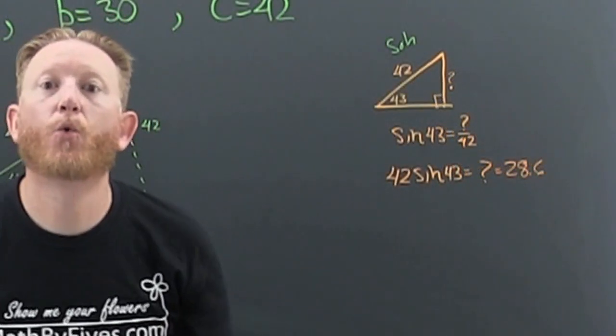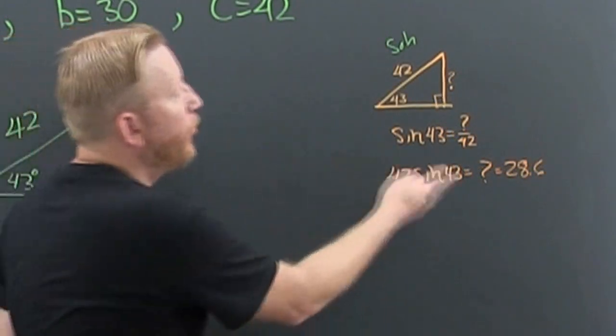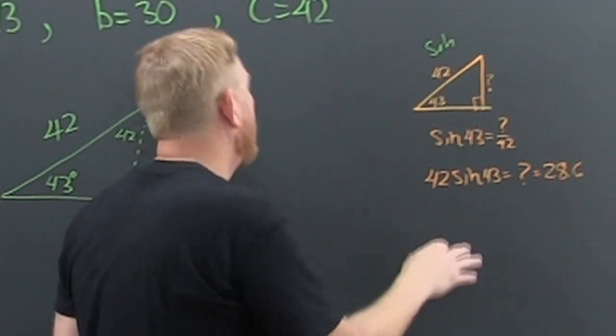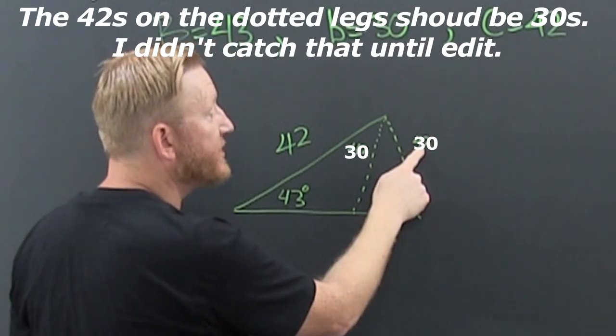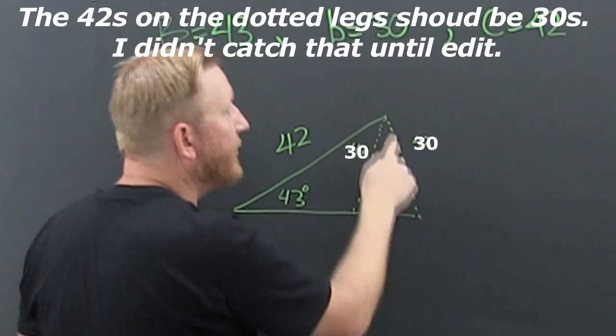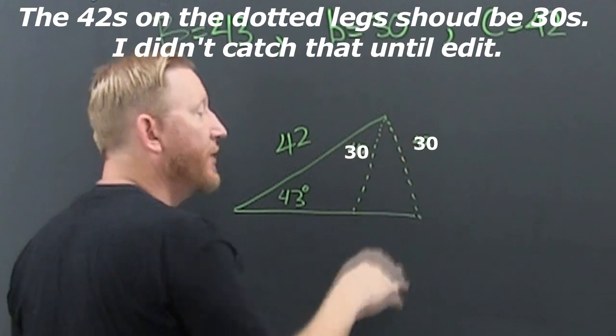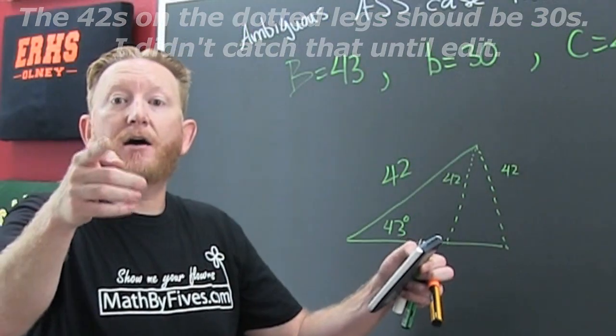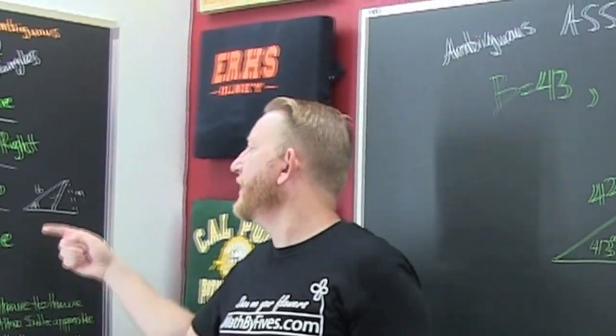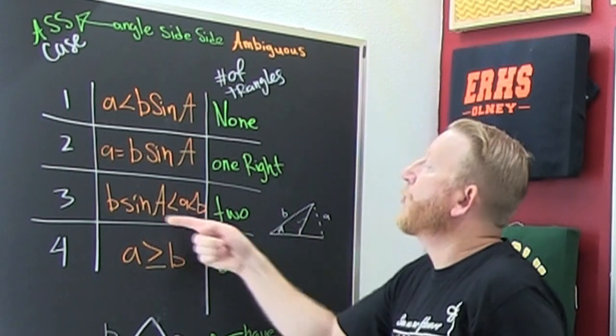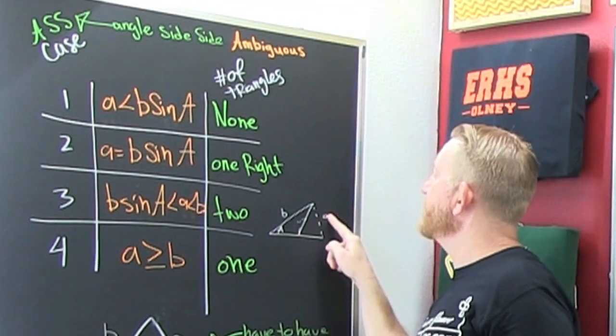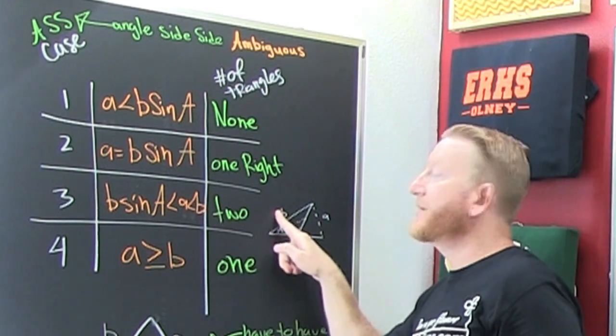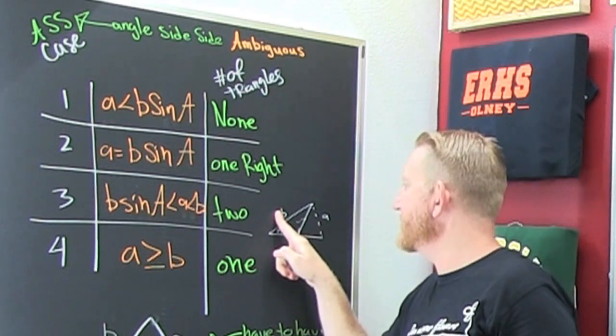What are we looking at? This is b sine A, whatever. If it was a right triangle, this needs to be 28. But look, 42 is long enough. 42 could be here or 42 could be there. So now we're going to use the law of... I'm talking about two triangles. What it should be is smaller than the opposite side and it's smaller than the hypotenuse. It's the two triangle case.